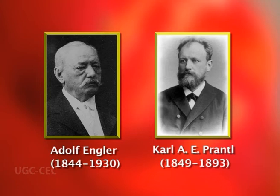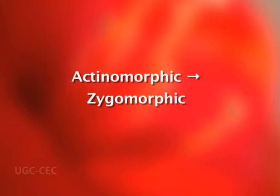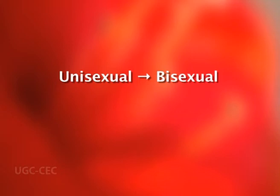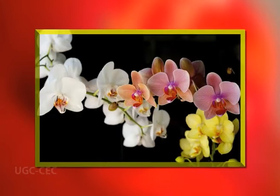Thus they proposed a polyphyletic origin of angiosperms. The evolutionary trends suggested by Engler and Prantl are: apetalous to polypetalous to sympetalous; actinomorphic to zygomorphic; unisexual to bisexual; hypogynous to epigynous. A significant feature of their system is that they placed monocotyledons before dicotyledons and considered the orchids to be more highly advanced than the grasses.